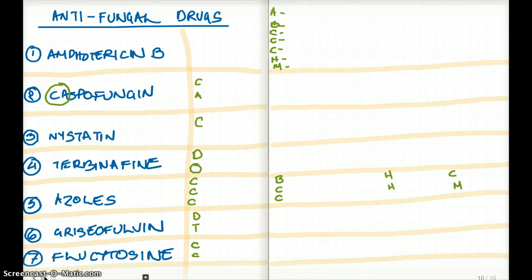So now let's see if we can achieve this purpose. The first one is amphotericin B. Like I mentioned, amphotericin B makes holes in the cell walls, leaking the electrolytes out. That was the mechanism of action.